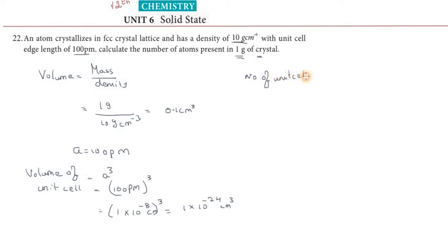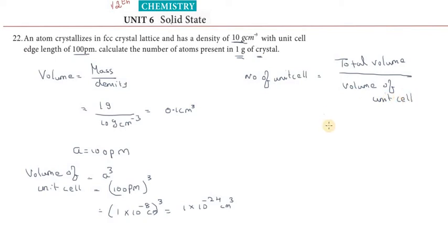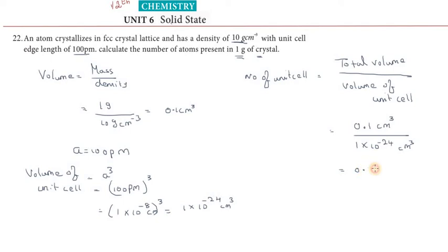Number of unit cells equals total volume divided by volume of unit cell. Total volume is 0.1 cm³ divided by 1 into 10 to the power minus 24 cm³. Calculating this gives us 0.1 into 10 to the power 24, which equals 10 to the power 23 unit cells.